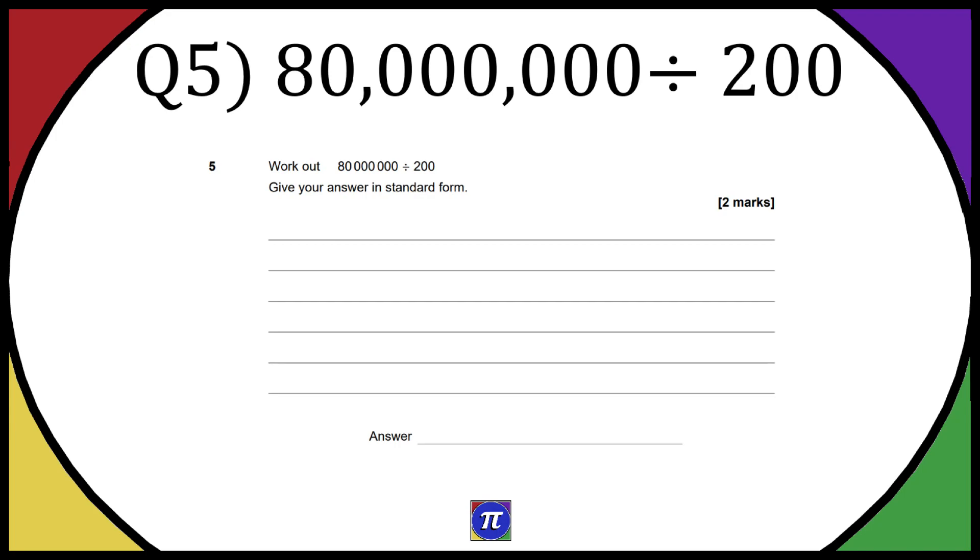Welcome to the video. This is going to be question number five from the past paper, or if you're just wondering how to work out this question, let's get into it. So this is 80 million divided by 200 and they want us to give the answer in standard form.